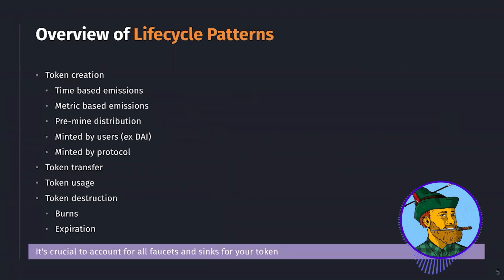Before we dive into life cycle patterns, let's talk about them from an overview. There are four different stages of the life cycle of a token: token creation, token transfers, token usage, and token destruction.